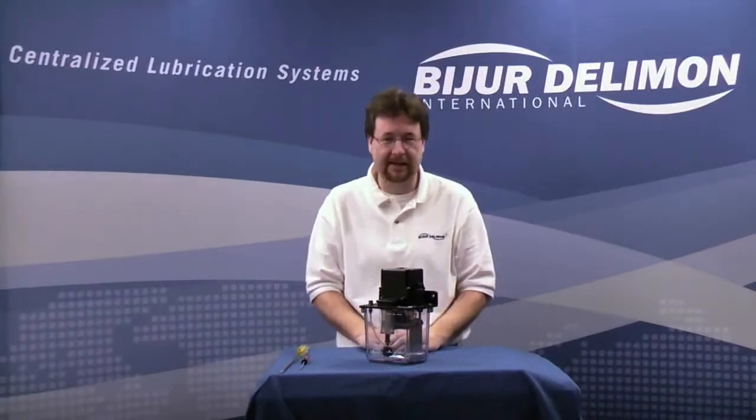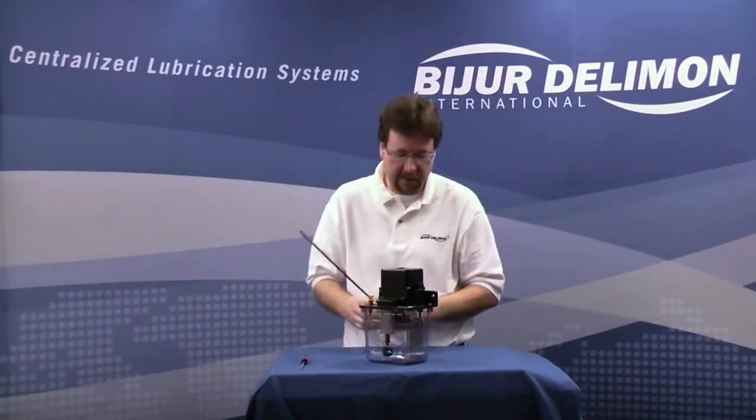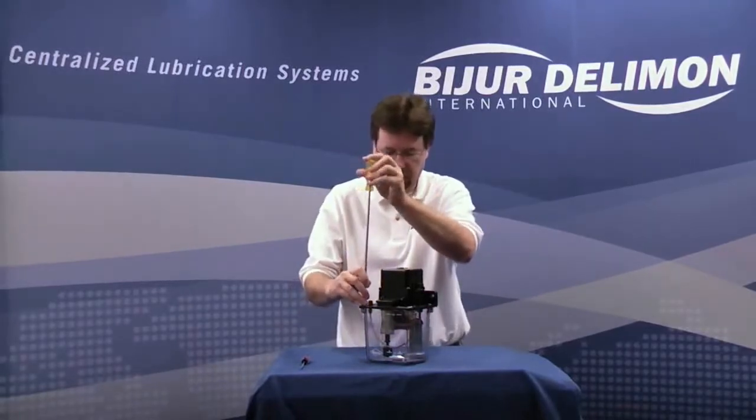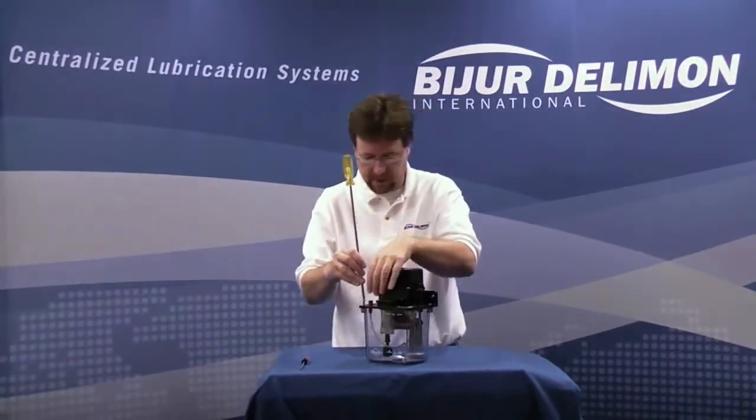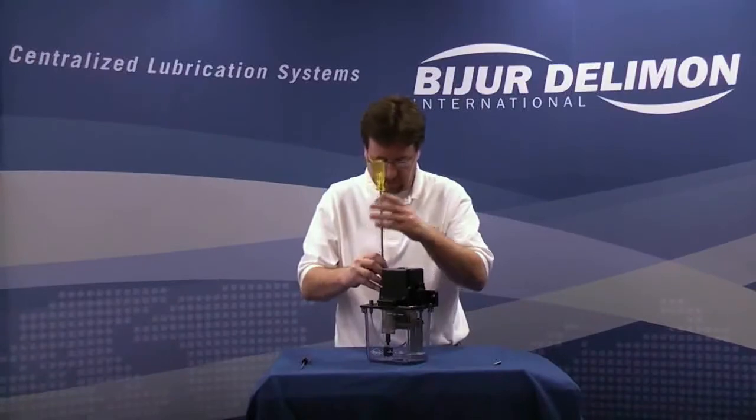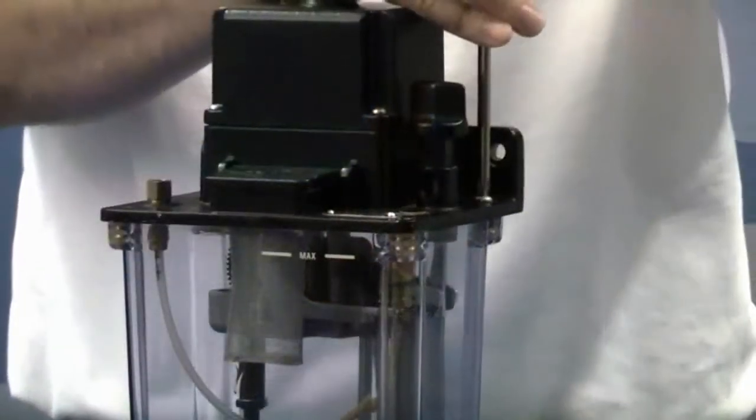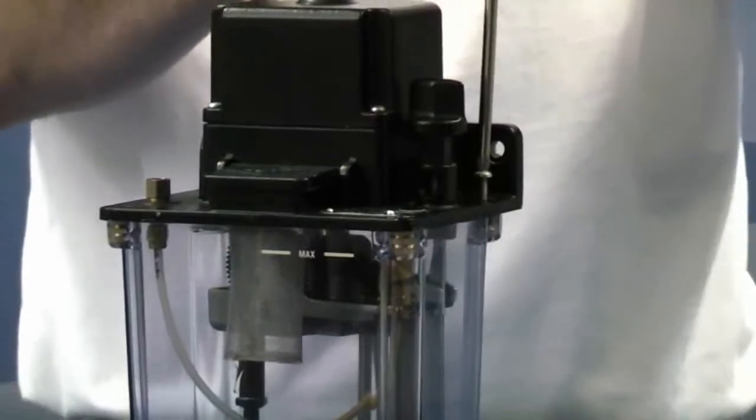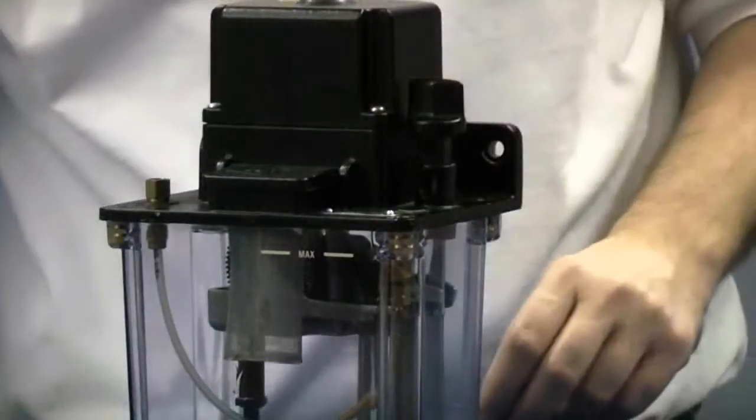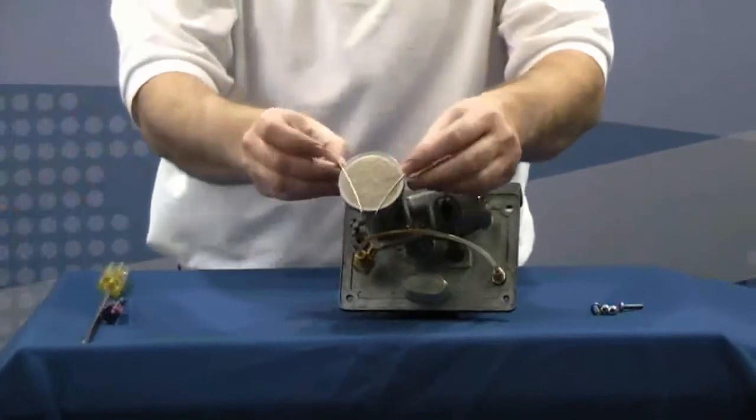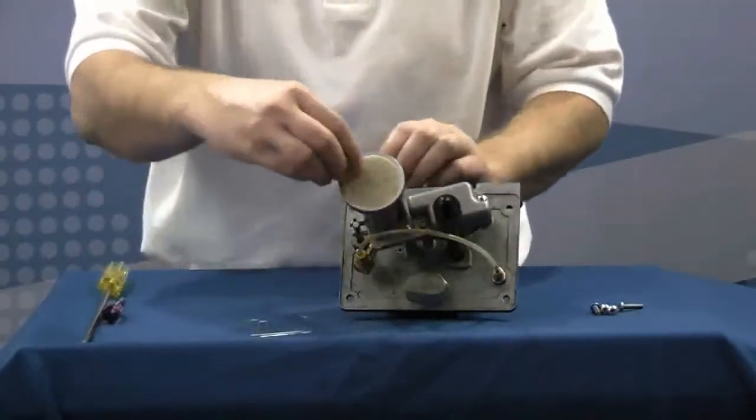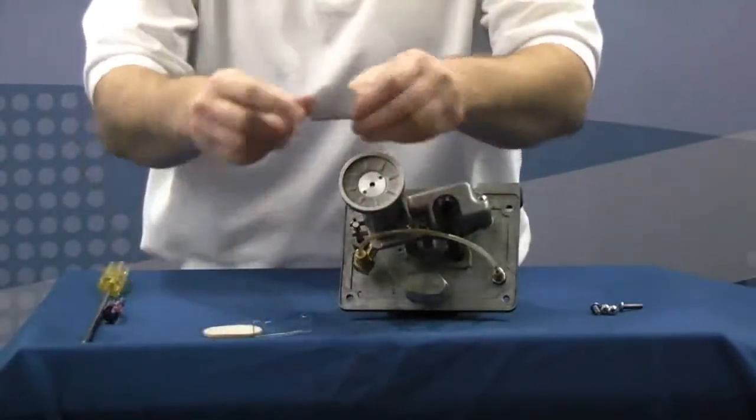Maintenance on the TMD5 is very easy. We'll start by removing and replacing the filter group. Remove the top four screws on the plates. Remove the unit from the reservoir. And we want to remove the filter. We'll just take off the clip, remove the felt and the filter screen.